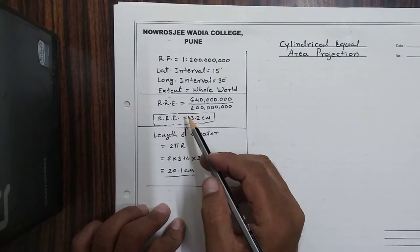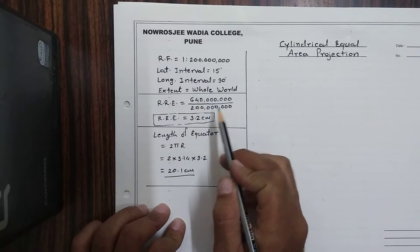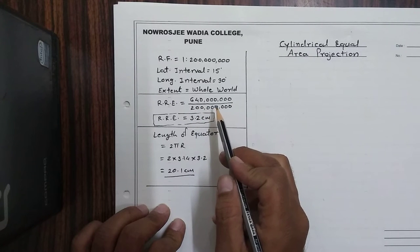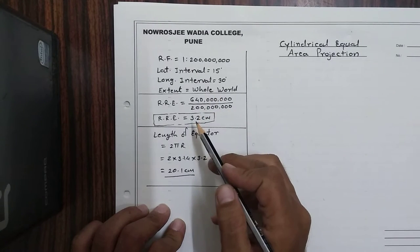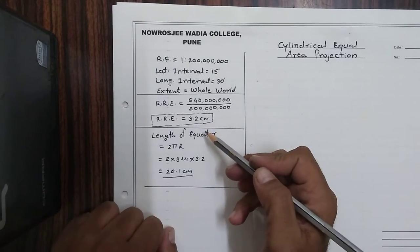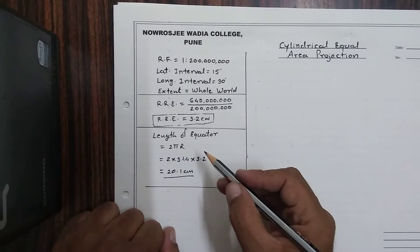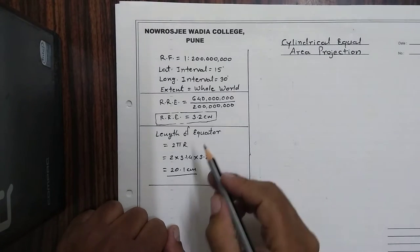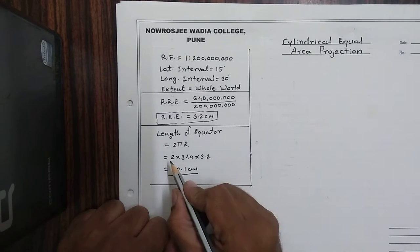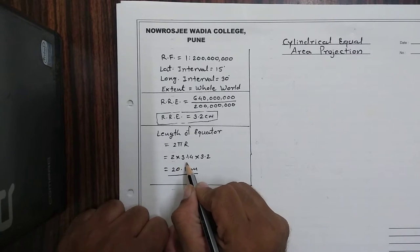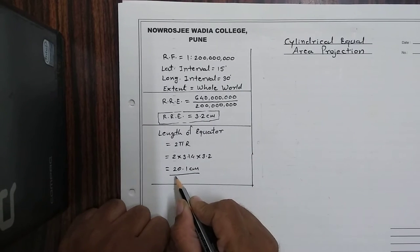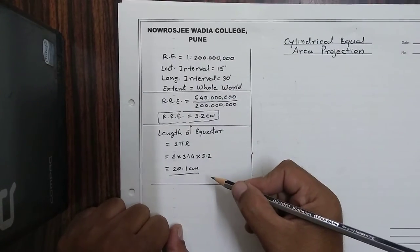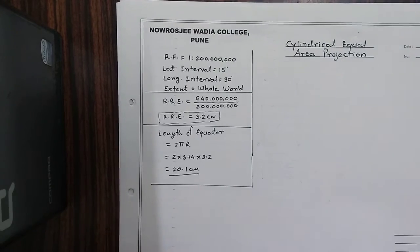Using this RF we are going to calculate RRE. The formula for RRE is radius of actual earth divided by the RF factor. The radius of actual earth is 6,400,000 and dividing by the RF factor gives us RRE = 3.2 centimeters. One more attribute we need to calculate is the length of the equator, using the formula 2πR. Putting in the values: 2 × 3.14 × 3.2 gives us the length of equator as 20.1 centimeters.